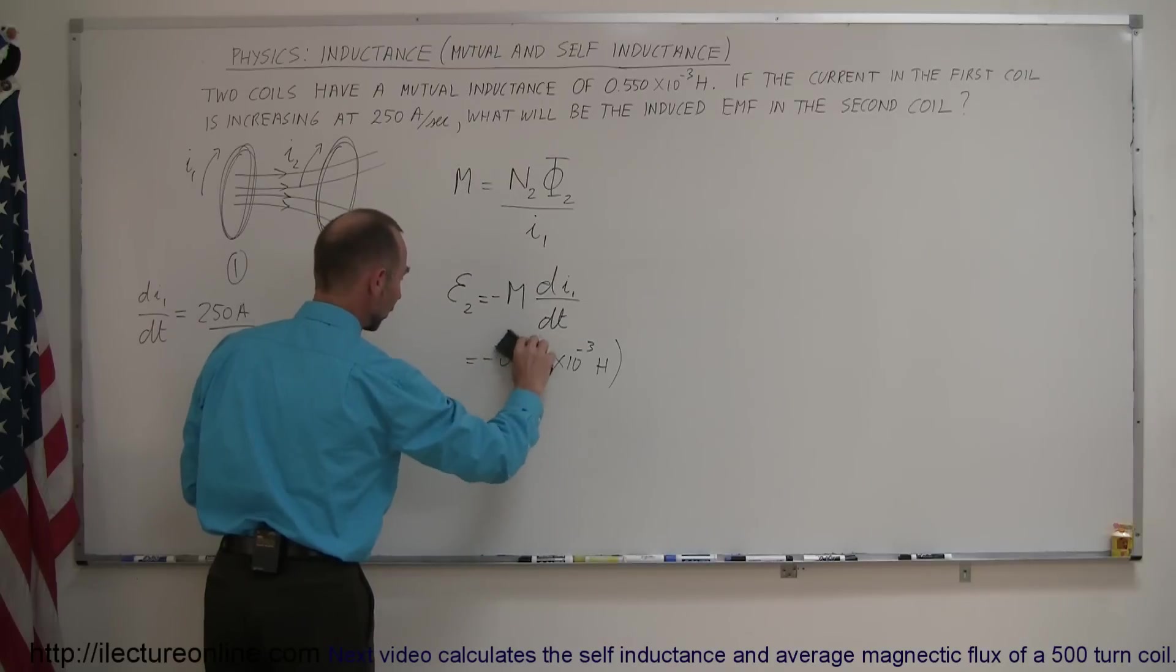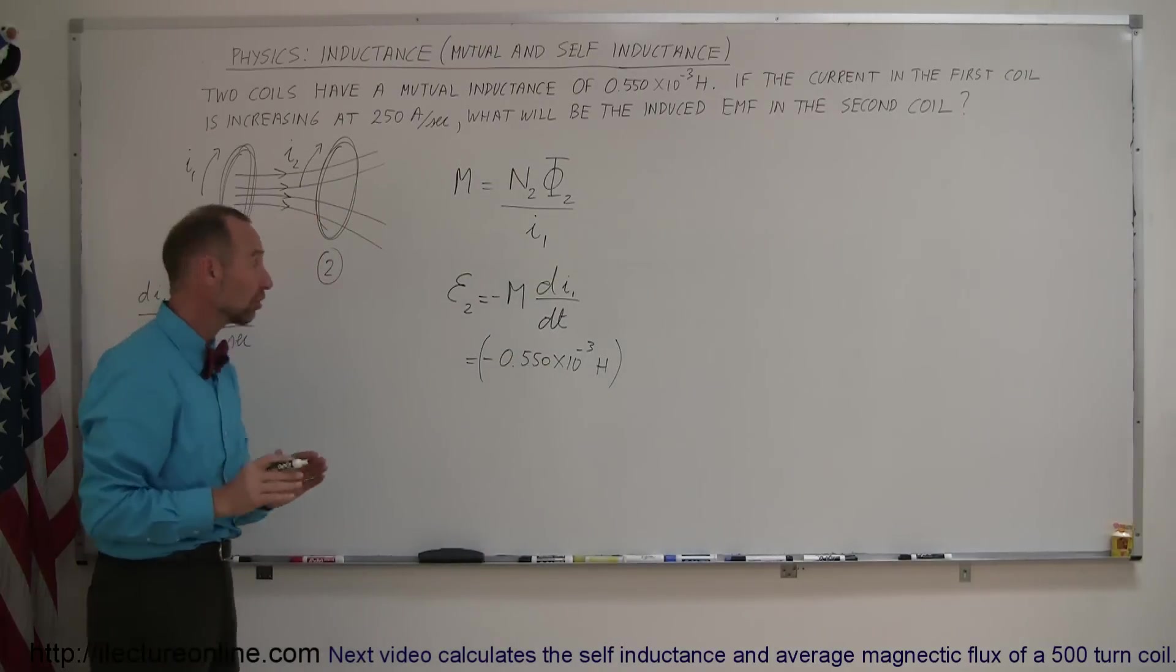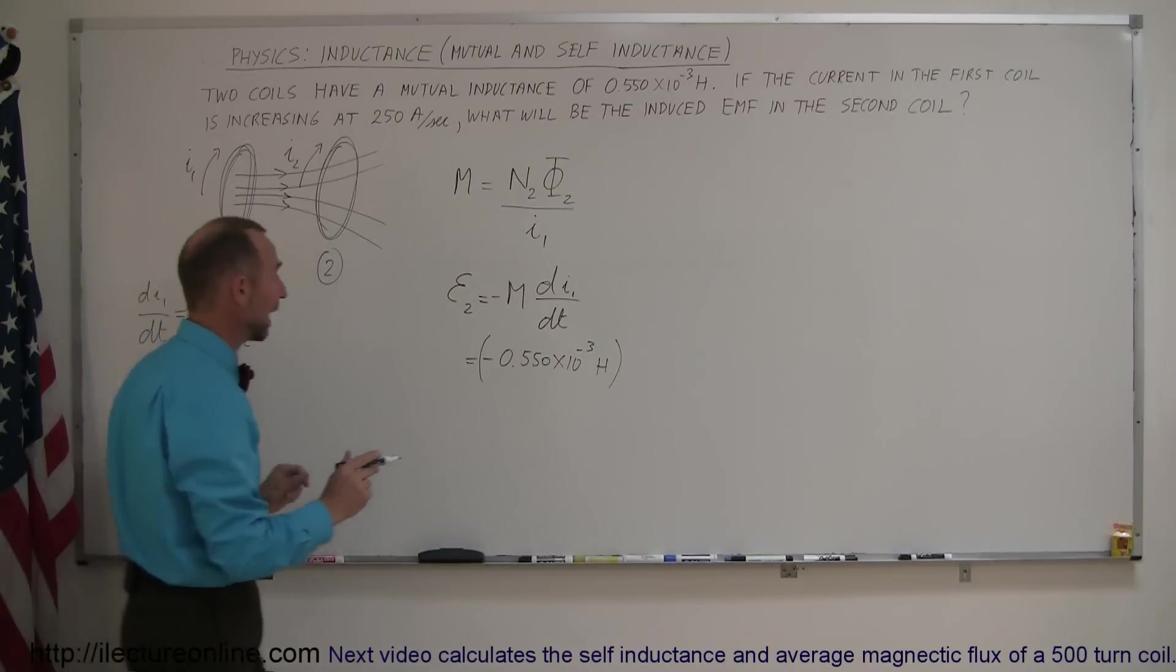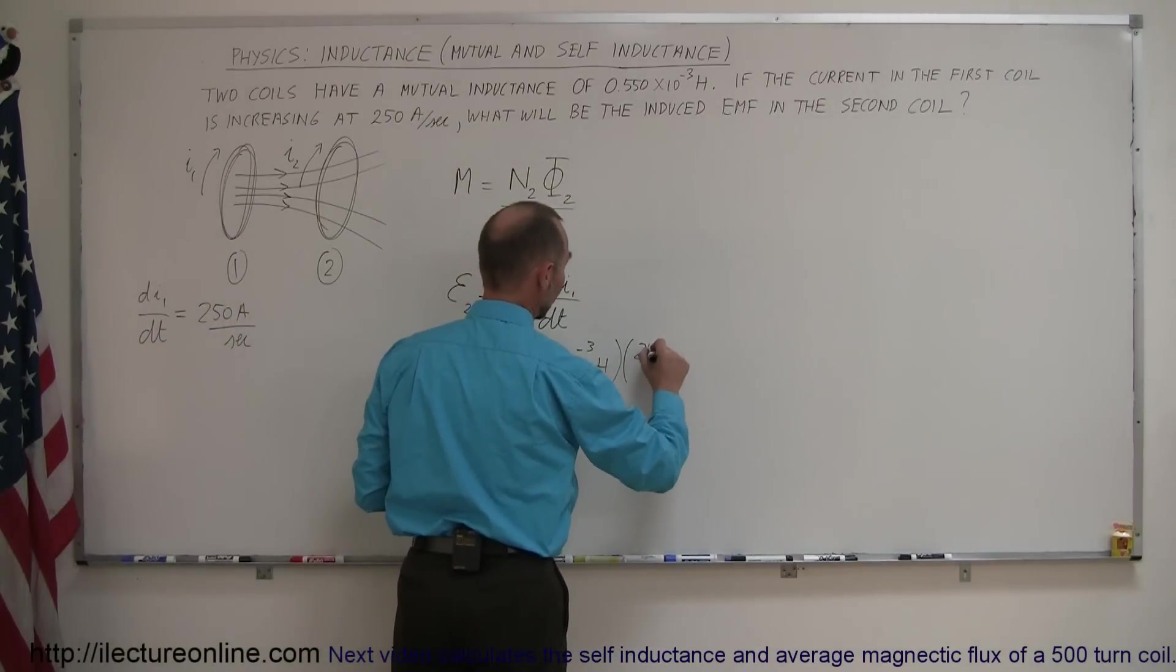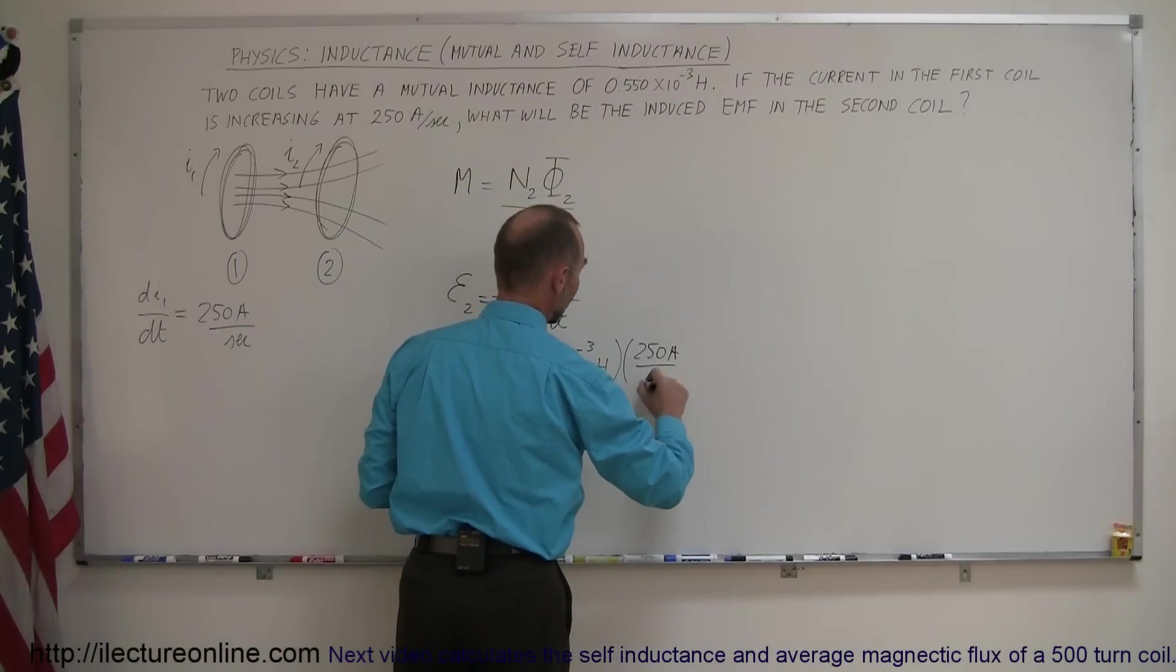And my bracket needs to include the negative sign, so there we go, times the rate of change of the current, which is right here, which is 250 amps per second. 250 amps per second.